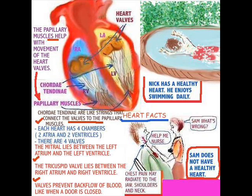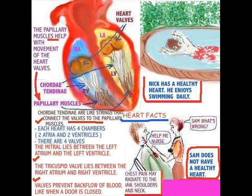We know that the heart has four chambers — two atria and two ventricles — two on the right and two on the left. It also has valves, and what the valves do is stop the backflow of blood. As blood is pumped through the heart, it keeps the flow of blood unidirectional, so you wouldn't expect that backflow.